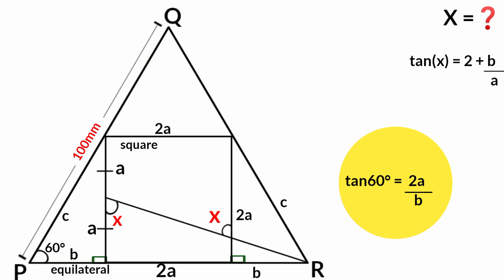We multiply both sides by b. Here b cancels b, and here tan 60 degrees times b. So b tan 60 degrees equals 2a. We divide both sides by a now. Here a cancels a, and here b tan 60 degrees over a is the same as b over a tan 60 degrees. So b over a tan 60 degrees equals 2.